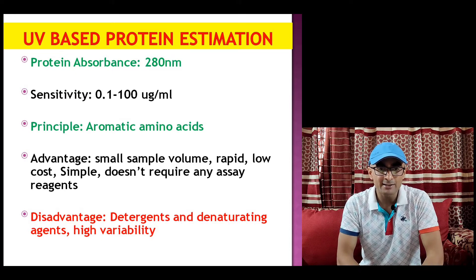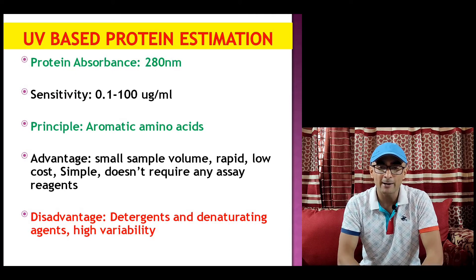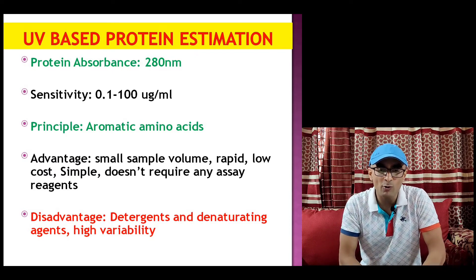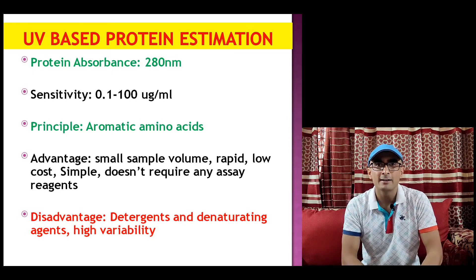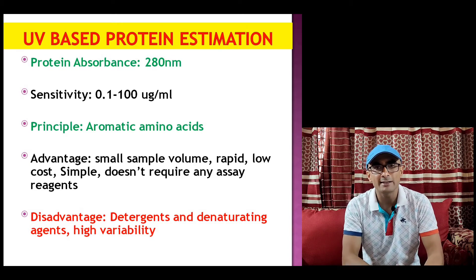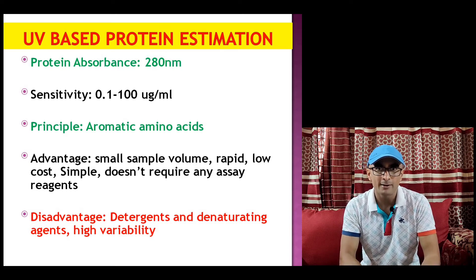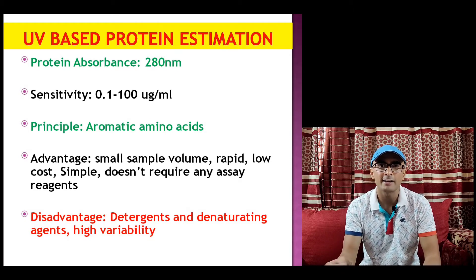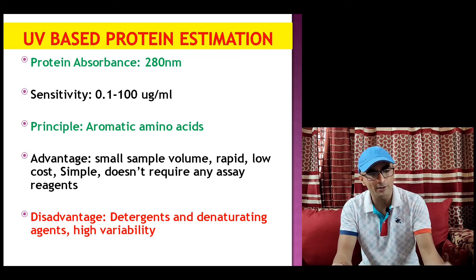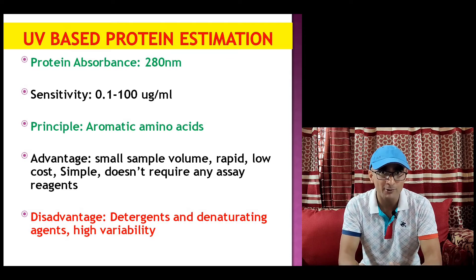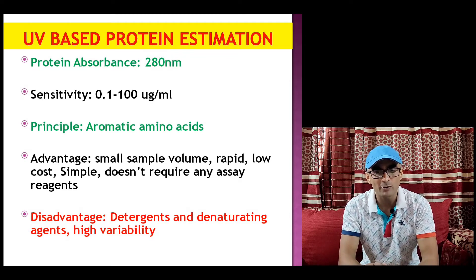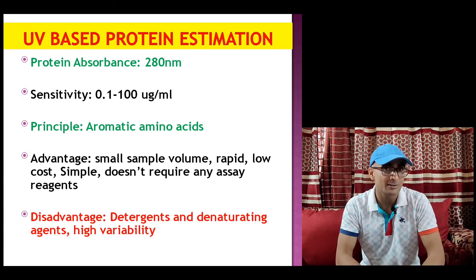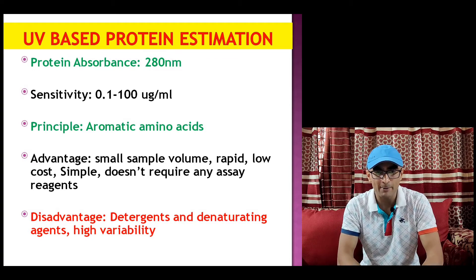The sensitivity is 0.1 to 200 microgram per ml. An advantage of this method is that a very small sample volume is required — as small as a nanoliter or a microliter drop can give you an estimation of protein concentration. It is very rapid: you quickly take one microliter sample, put it on a spectrophotometer, and it can quickly give the absorbance and calculate concentration of the protein.